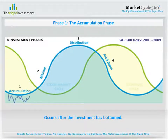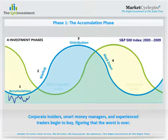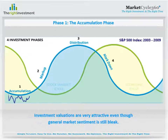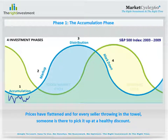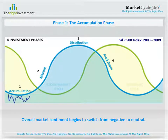The first phase is the accumulation phase and occurs after the investment has bottomed. In this phase, corporate insiders, smart money managers, and experienced traders begin to buy, figuring that the worst is over. Investment valuations are very attractive, even though general market sentiment is still bleak. Usually, articles in the media preach doom and gloom, and those who were long through the worst of the investment's decline have recently capitulated — that is, given up and sold the rest of their holdings in disgust. But in the accumulation phase, prices have flattened, and for every seller throwing in the towel, someone is there to pick it up at a healthy discount. The final part of the accumulation phase is that overall market sentiment begins to switch from negative to neutral.